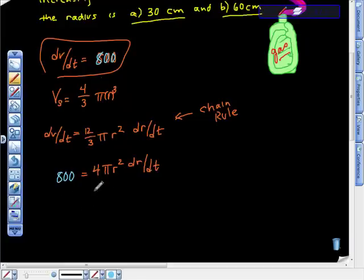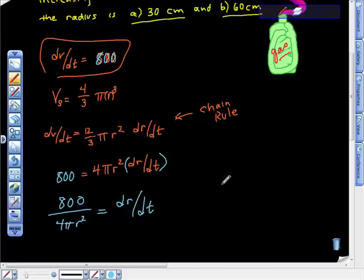What we're interested in is this piece right here. I'm going to divide both sides by this and get 800 over 4π r² equals dr/dt. And remember, that's exactly what we want.